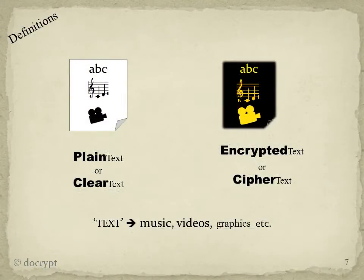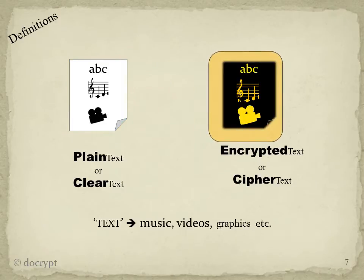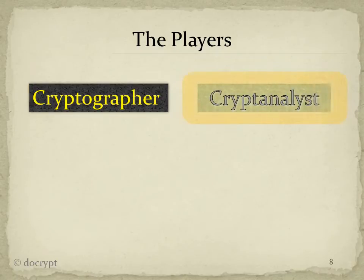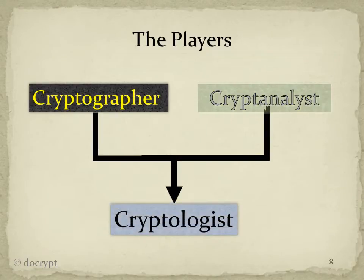Before we take a look at these methods, let's define some terms. Unencrypted data, whether it be text, music, video, etc., is called plain or clear text and will always be shown as black on white. Encrypted data will always be shown as yellow on black. Folks that create encryption methods are called cryptographers. Those that have a deep understanding of those methods and can remove the encryption, often without a key, are called cryptanalysts. If you want to refer to both of them as a group, you use the word cryptologist.